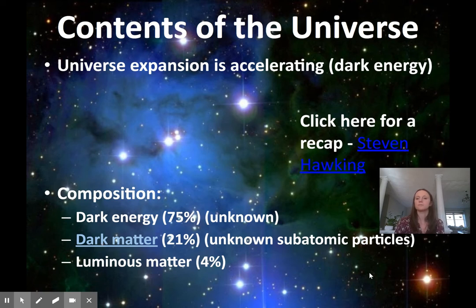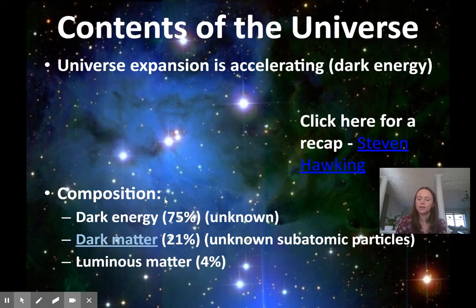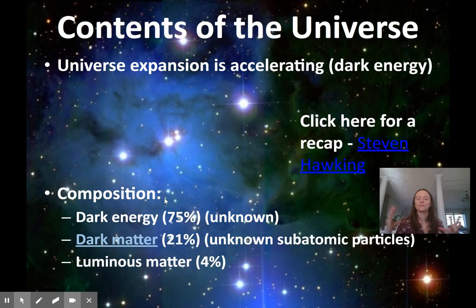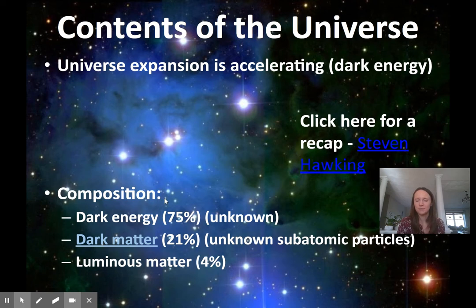The last slide is about what the universe is made up of — the composition of the universe. Dark energy makes up 75% of our universe. There's not a lot known about what dark energy is, but whatever it is, it's causing the expansion of the universe — causing galaxies to move away from each other. 21% of the universe is made up of dark matter. The word 'dark' in front of both terms indicates there's not a lot known about either of them.